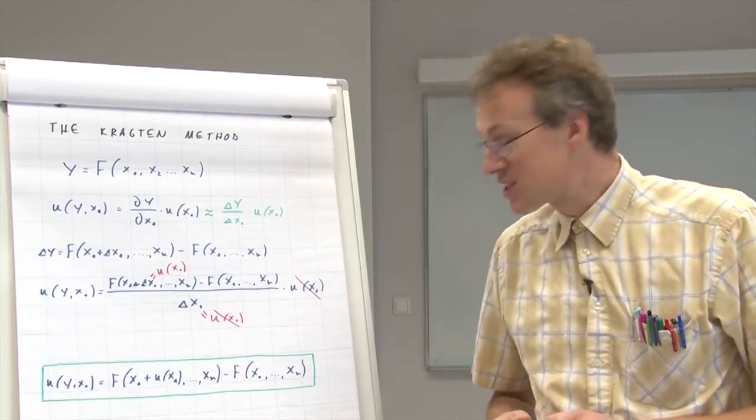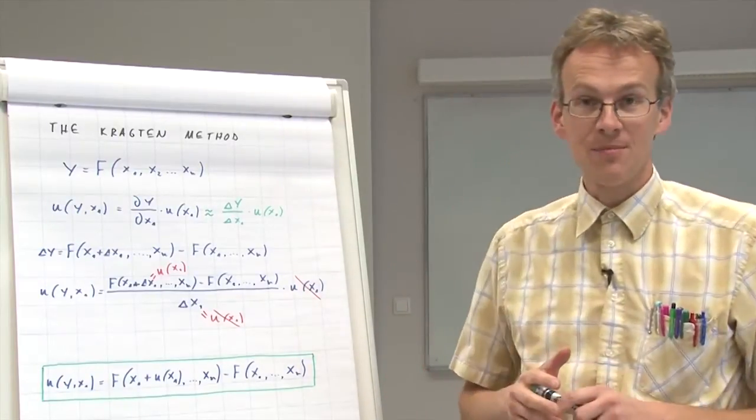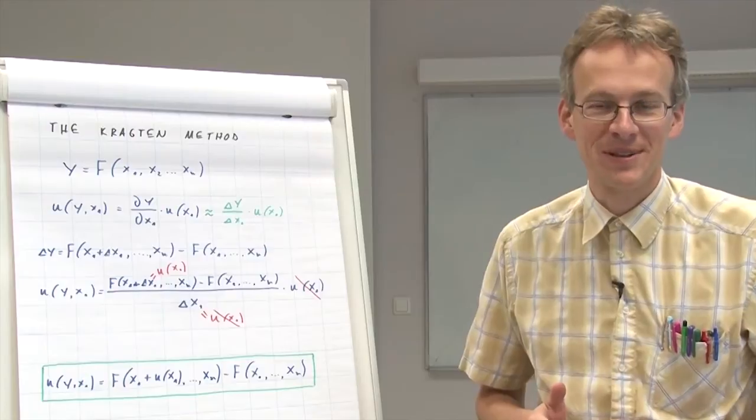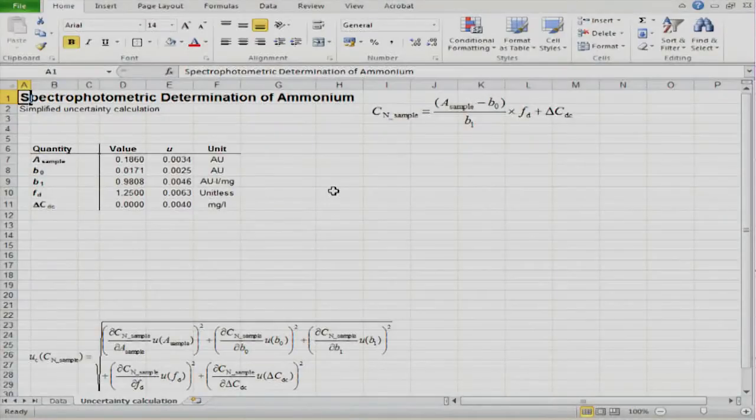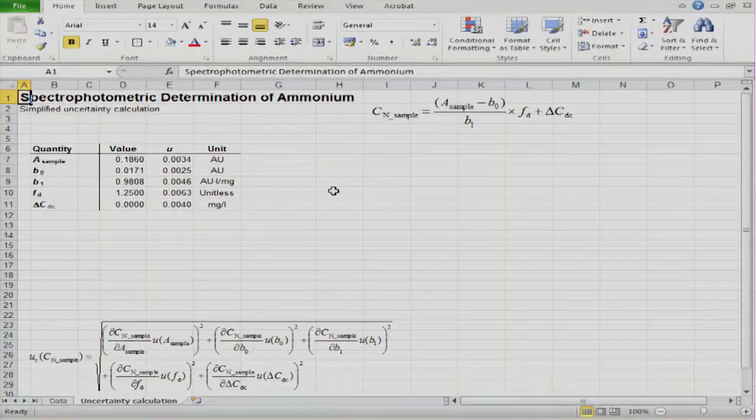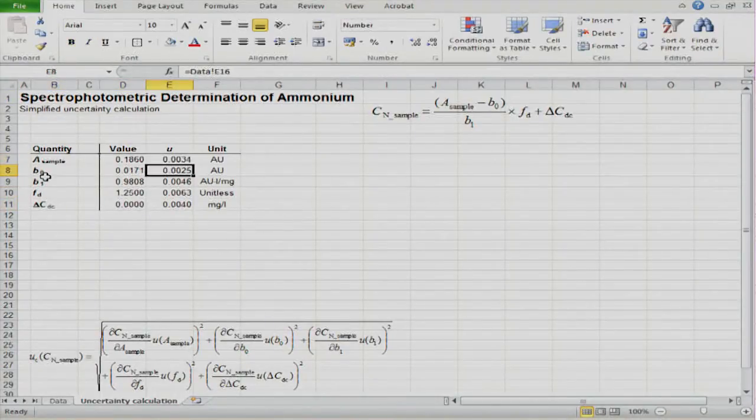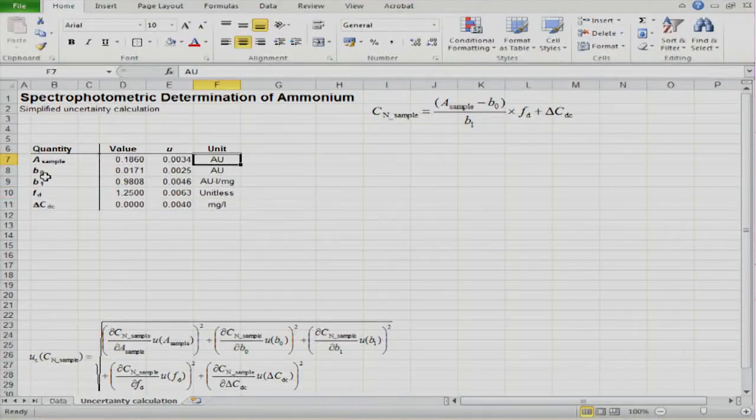We will now illustrate this by calculating, as a concrete example, the uncertainty of our particular ammonium determination example. Let us see now how the Kragten approach of calculating the uncertainty components by the numerical method works in practice. I have prepared here an Excel spreadsheet in such a way that we have here all our input quantities, their values, their standard uncertainties, and their units.